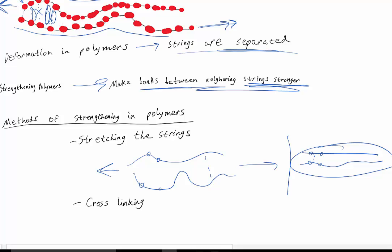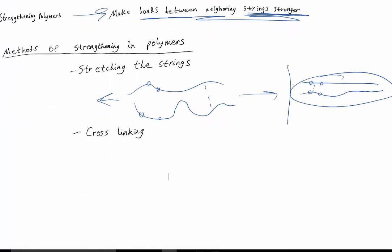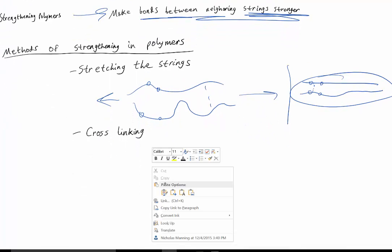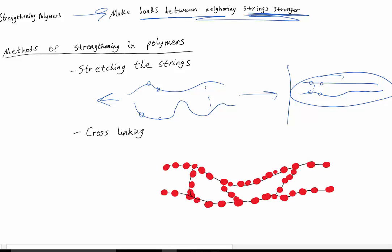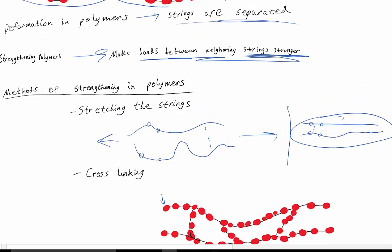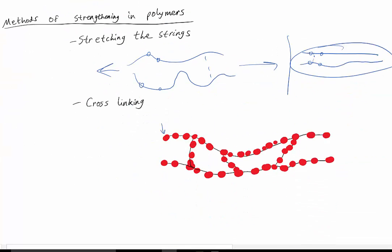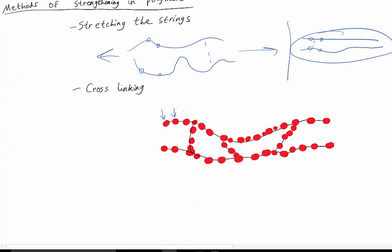Another way of strengthening polymers is cross-linking. So cross-linking looks like this. We have our repeat units, just like the picture up here. These little red dots are the repeat units. Cross-linking is when we introduce a new little string of repeat units in between the neighboring polymer strings.